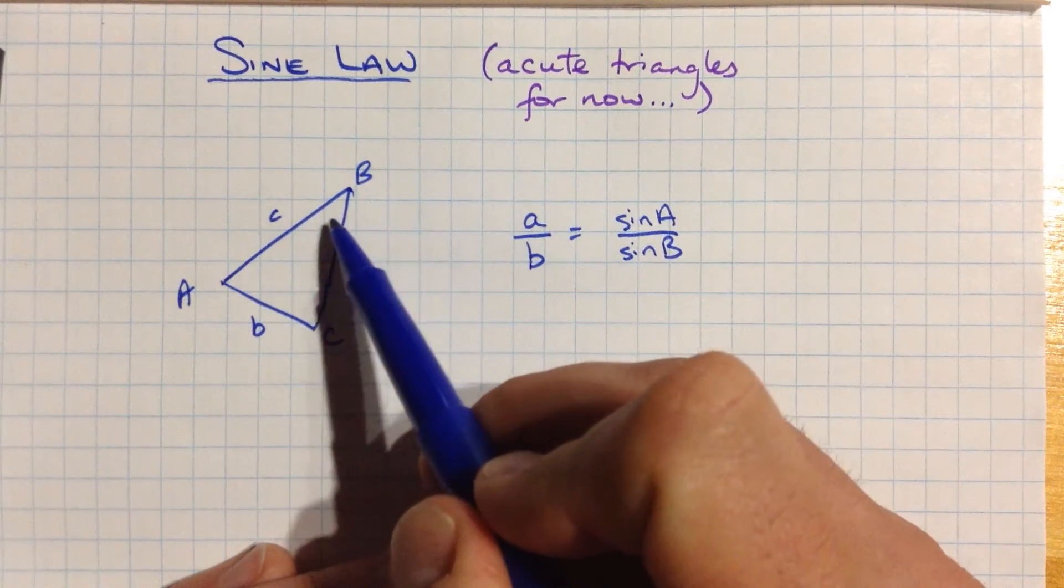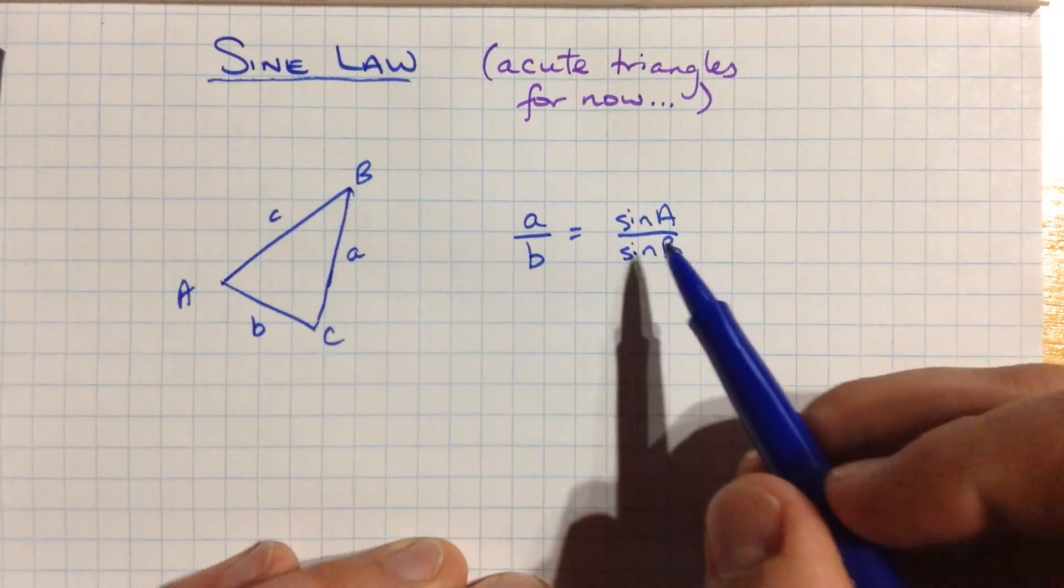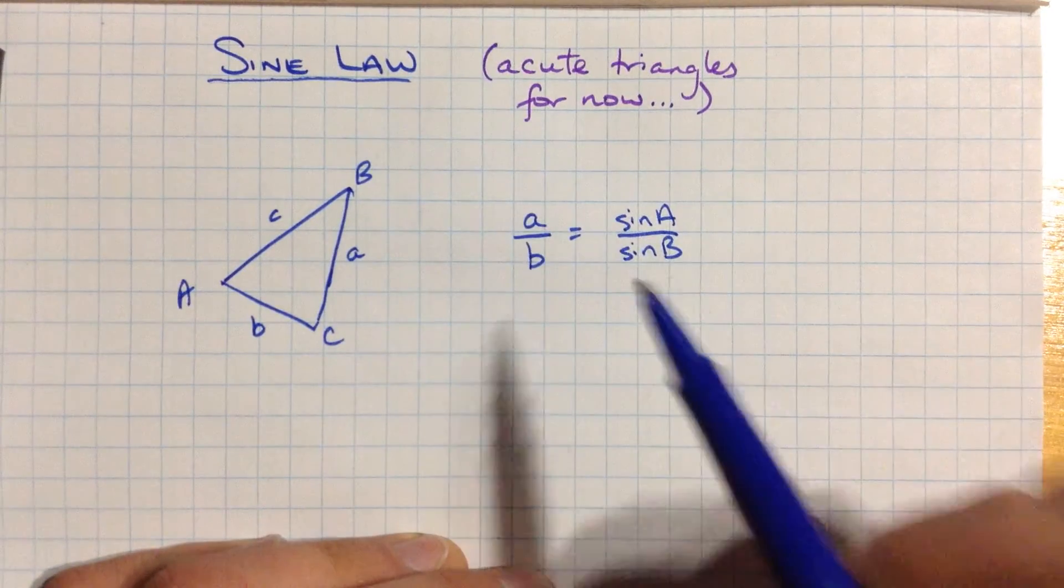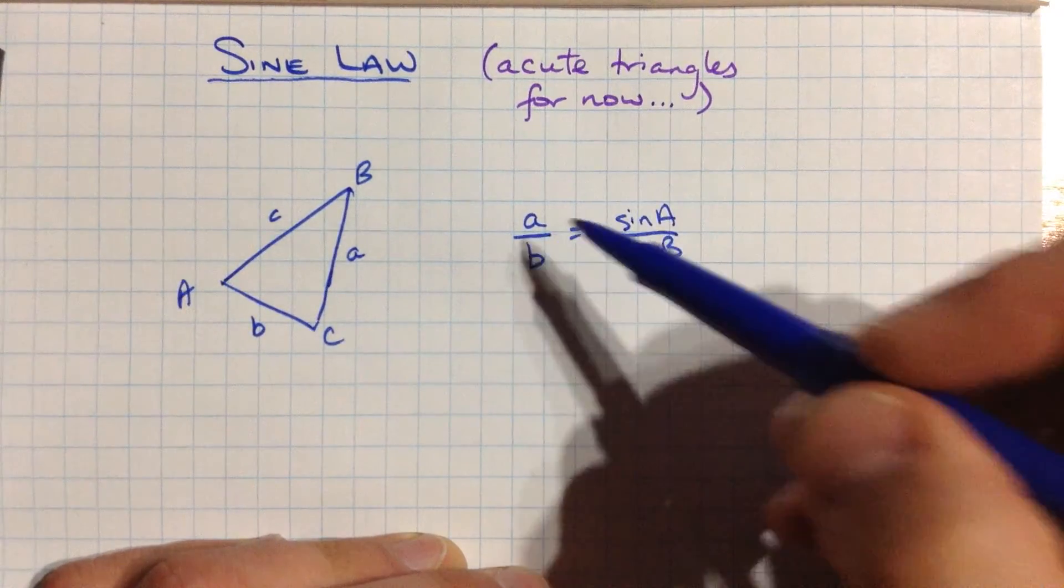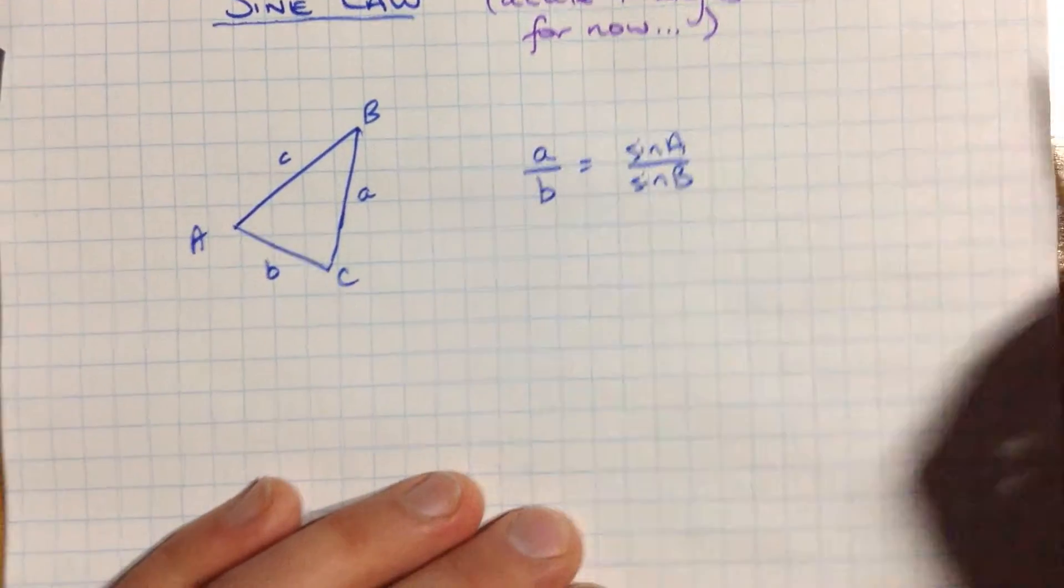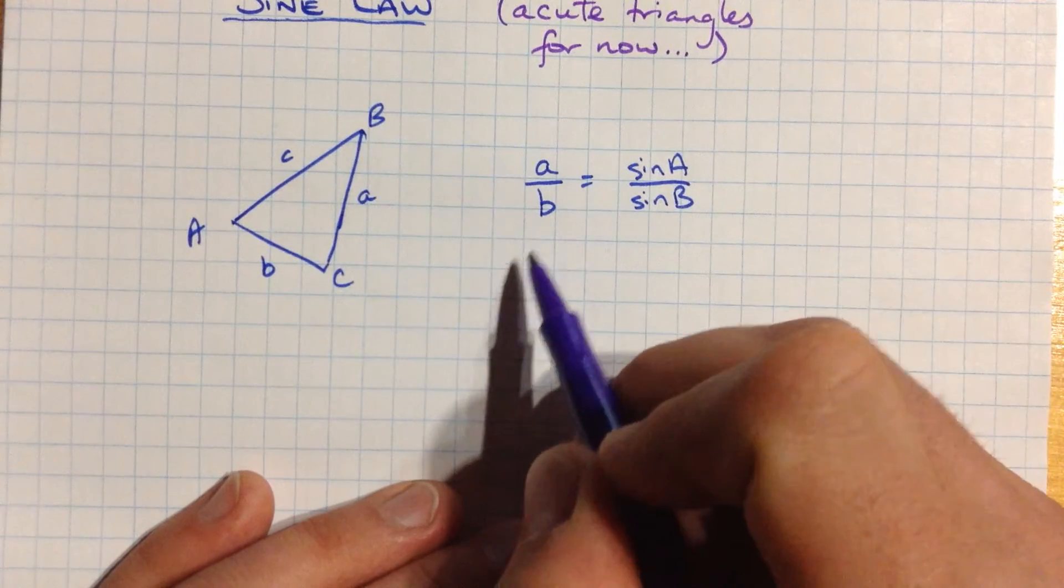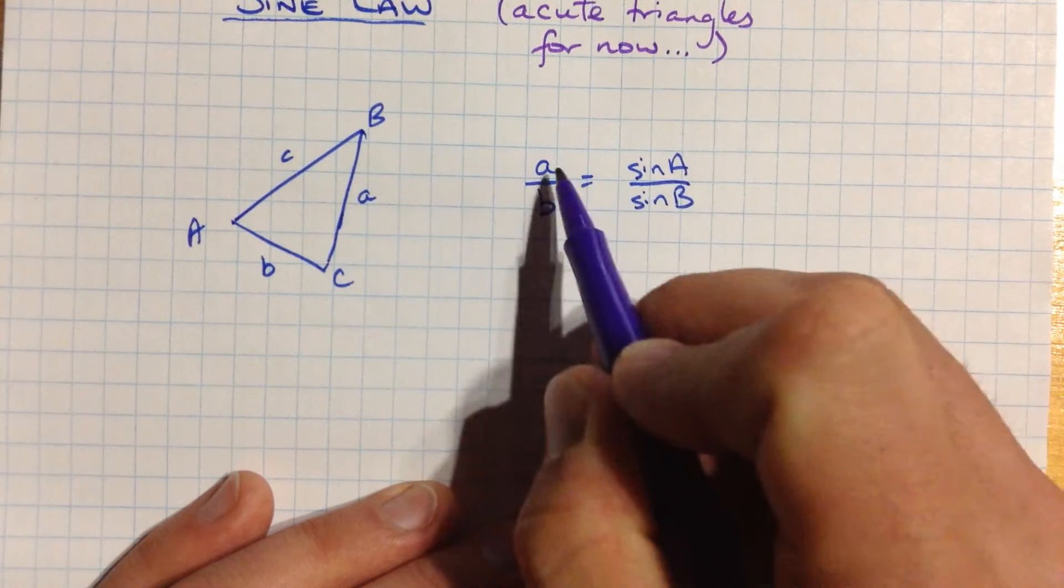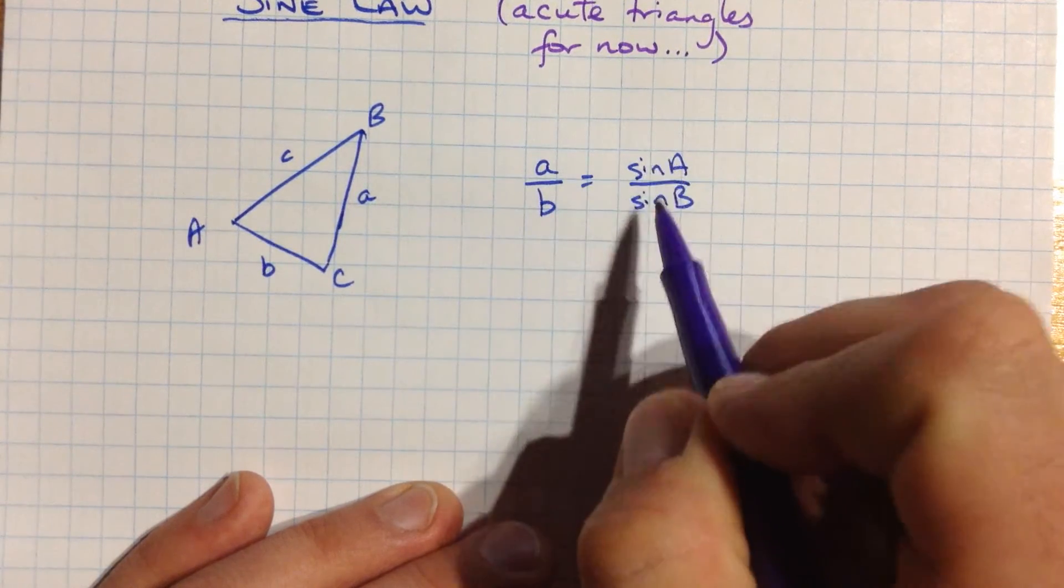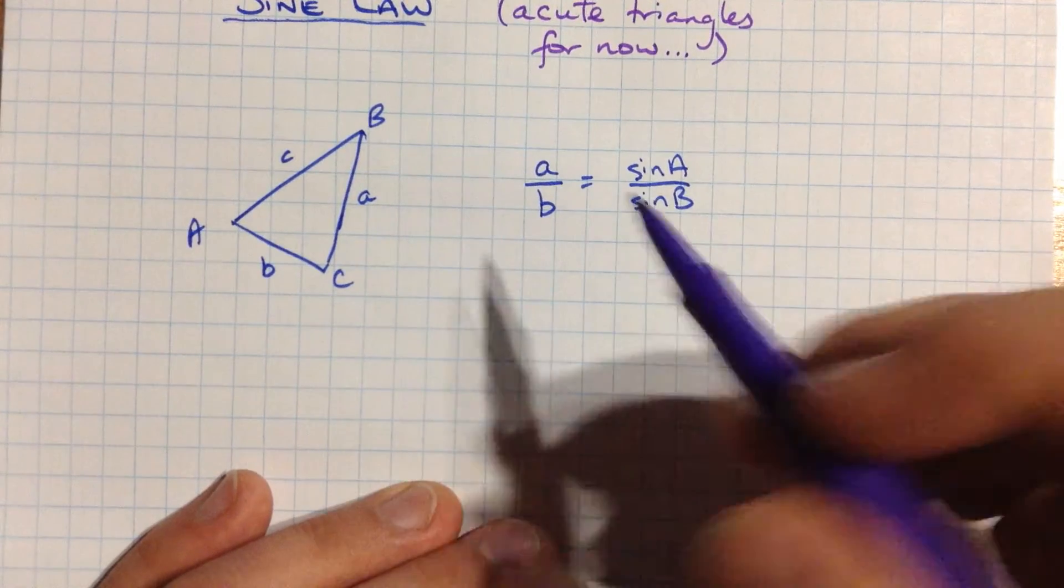Those are the interior angles. Angle b would be this one right in here. And you could do that for every pair, and you can flip them all over. So b over a is sine b over sine a. Or what happens is we generalize this, or maybe rearrange this, and we realize that we can have sine b over b equals sine a over a, or vice versa, like flip it over.